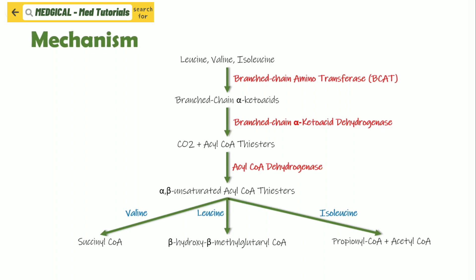That is the brief scheme of metabolism of leucine, valine, and isoleucine in our body. Now, if there is a deficiency of branched-chain alpha-keto acid dehydrogenase enzyme, there won't be breakdown of leucine, valine, and isoleucine in the human body, which will lead to accumulation of them. This disorder is called Maple Syrup Urine Disease.